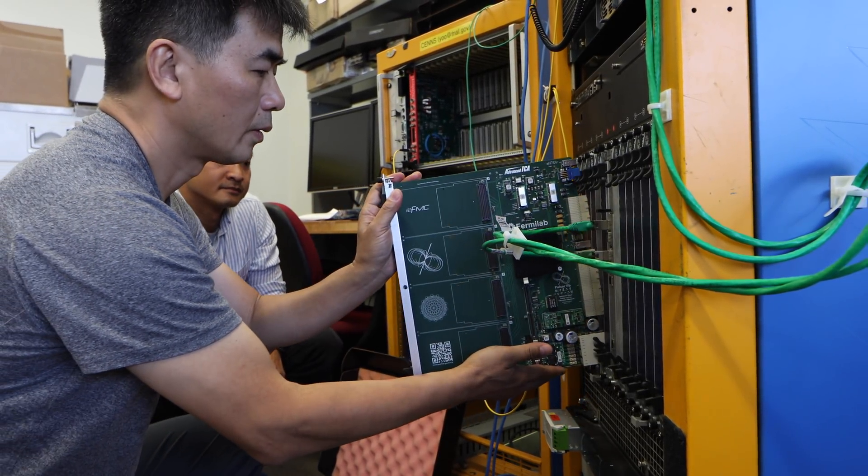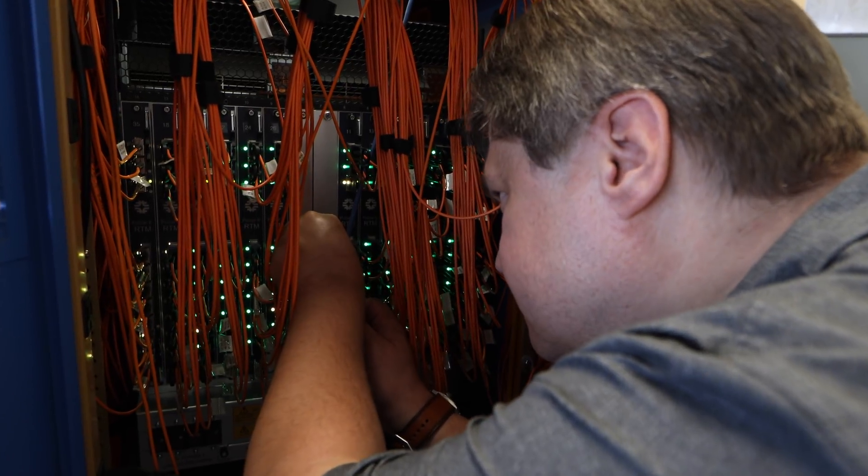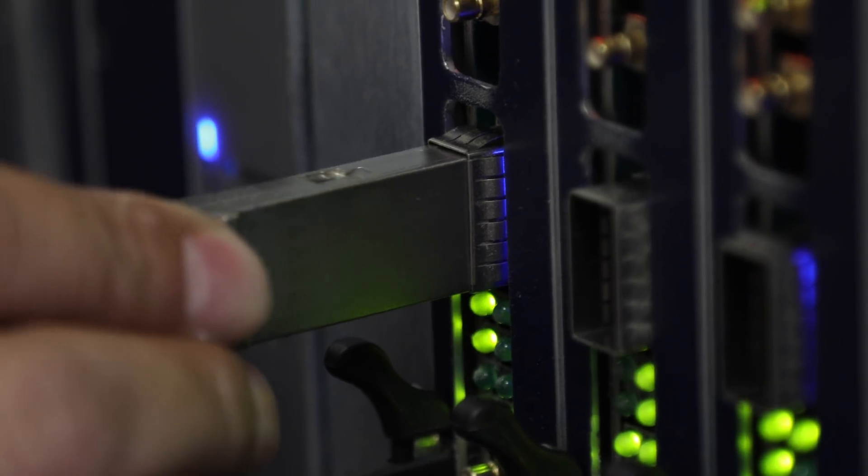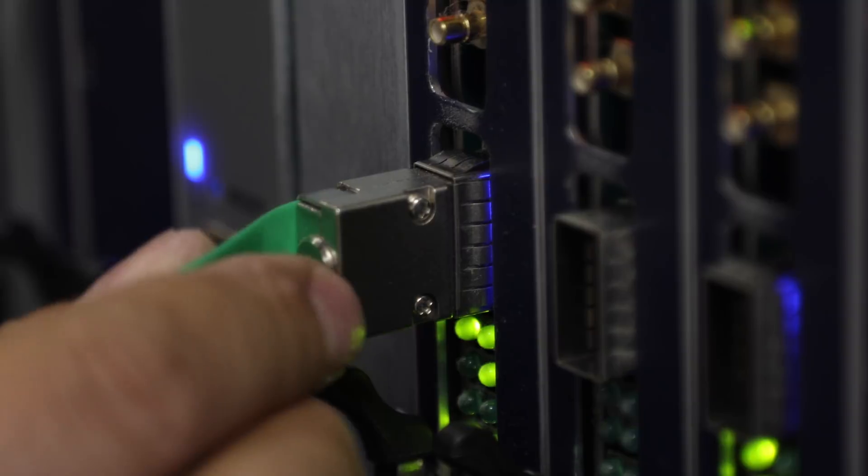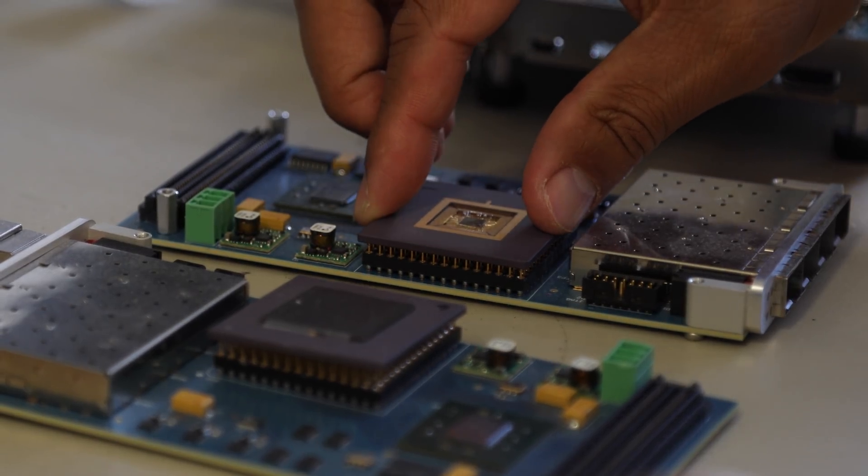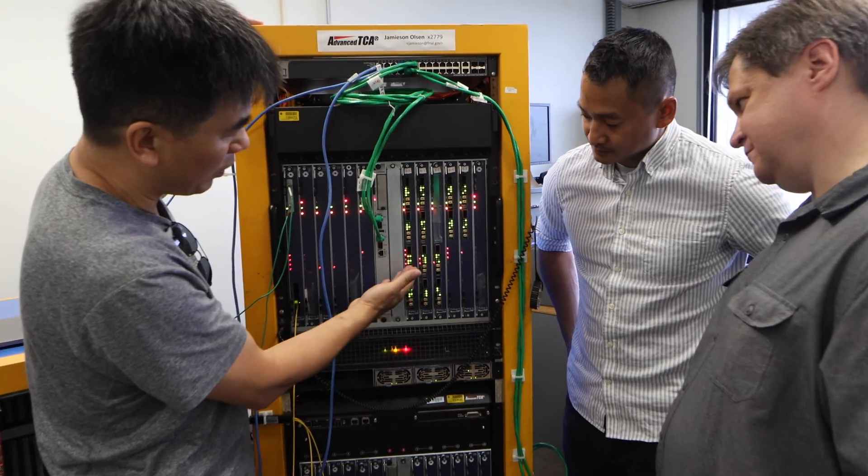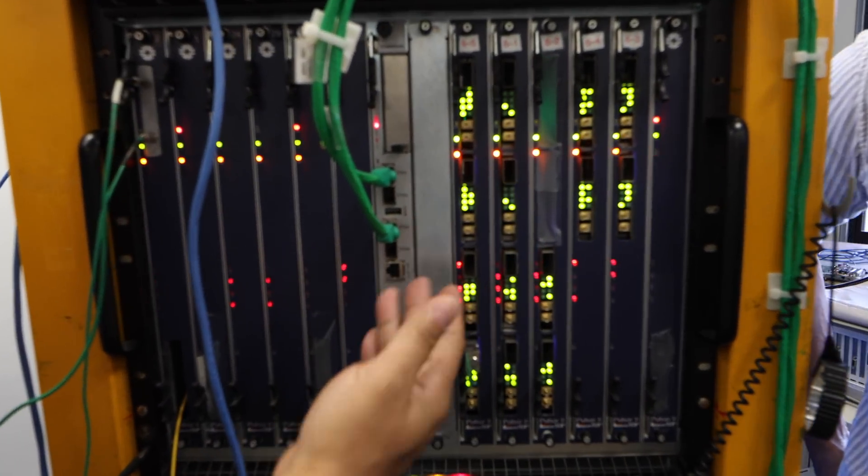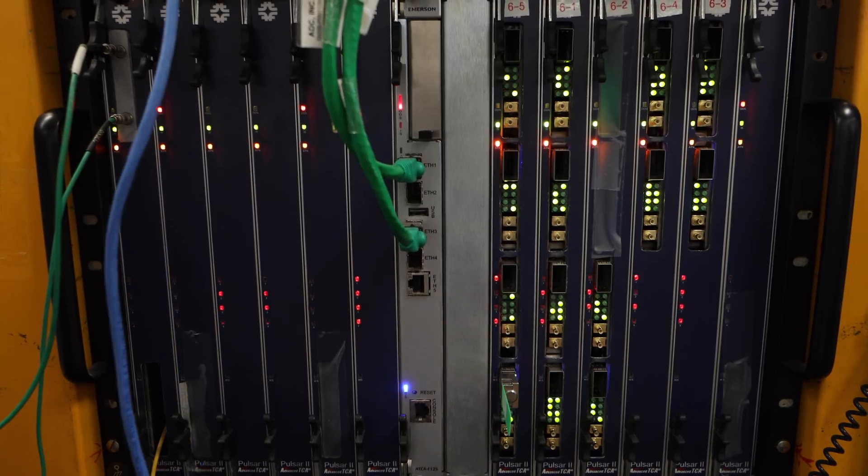We do that by teaching electronics and computers to scan the data and keep the data of one collision out of every 40,000. The equipment that does this is called a trigger. Improvements in electronics and computer technology are allowing us to vastly improve our ability to properly select and record only the most interesting collisions.